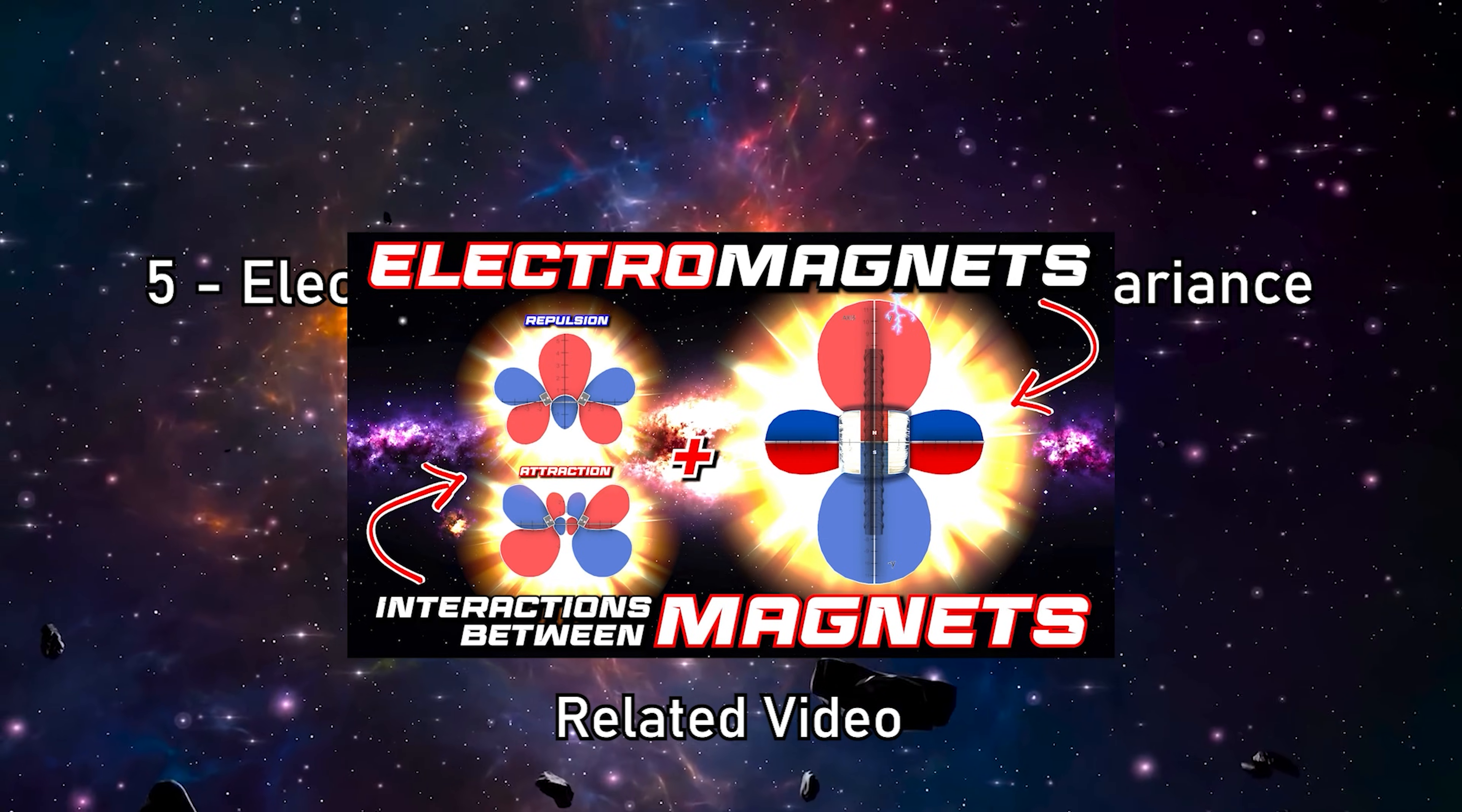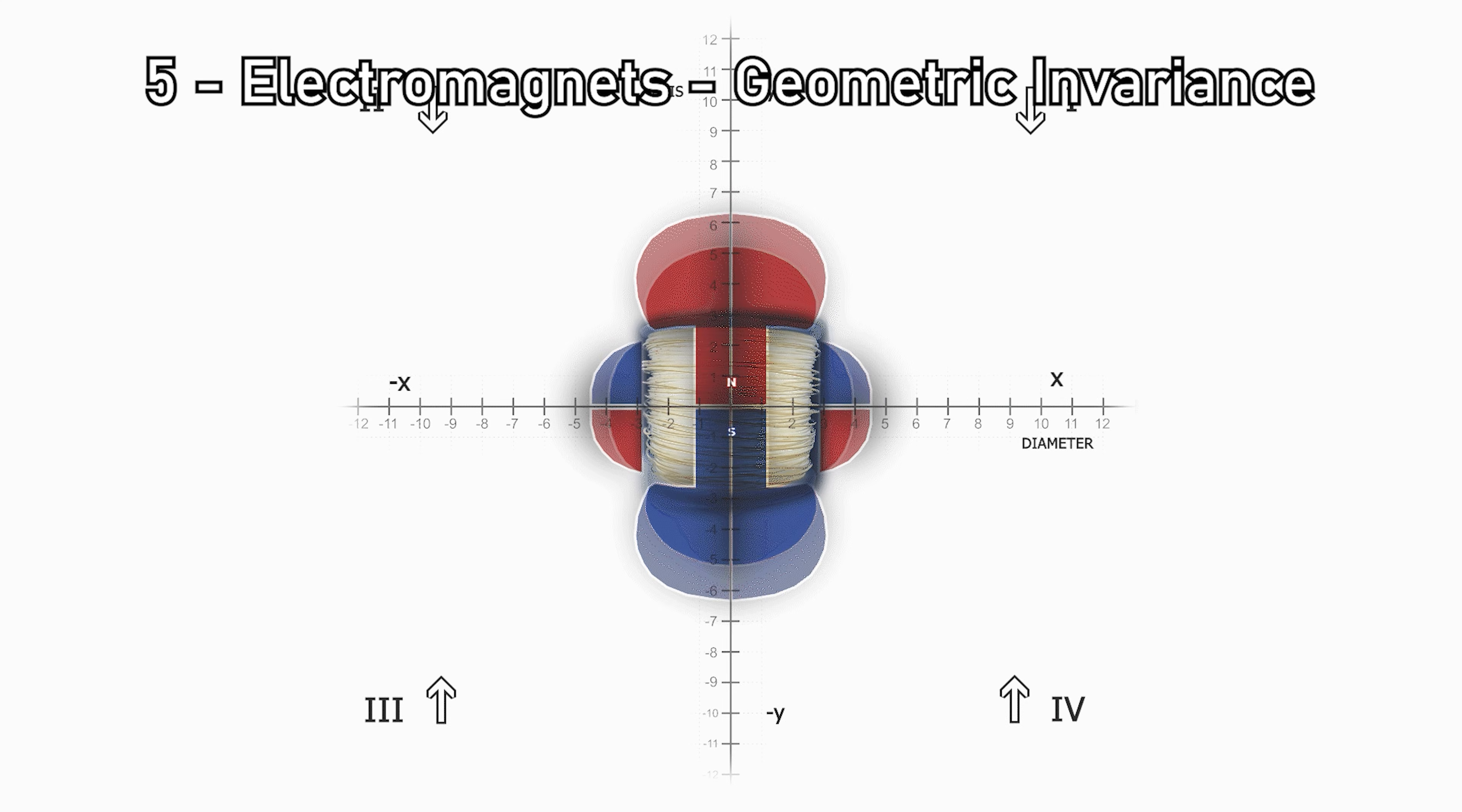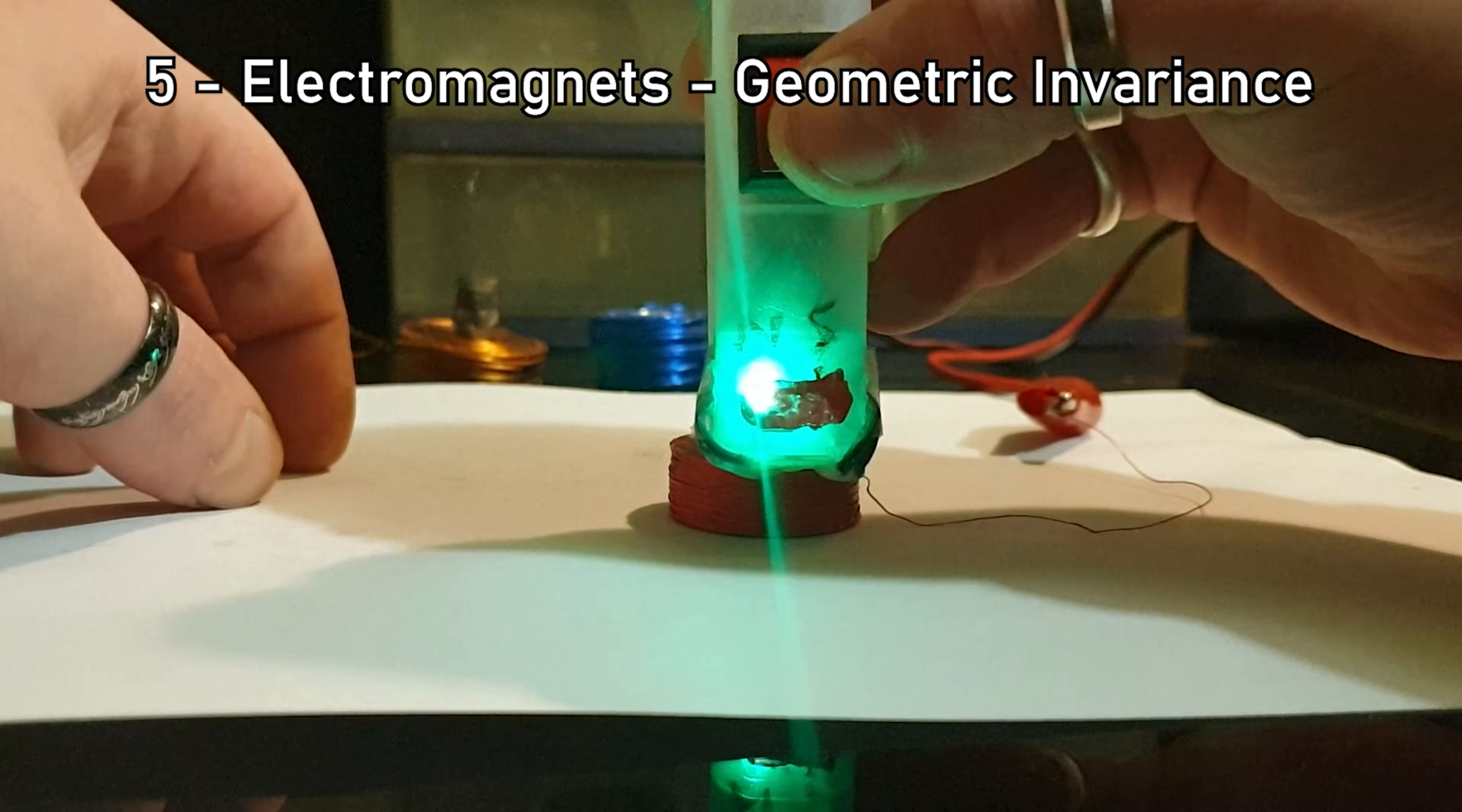5. Electromagnets Geometric Invariance. Electromagnets exhibit the same geometries and the same interaction angles. The source, current, and control parameters change, but the geometric language remains invariant. This suggests that we are not observing an accidental property of a specific object, but a deeper structure of the interaction system itself.